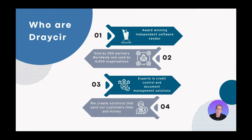So to start off with, Dracer. As an organization we're based in the UK but we sell our software throughout the world. We have about four and a half thousand organizations who use our products and we sell our products through our business partner network which consists of around 500 business partners. We're a leading ISV, so independent software vendor, and we create award-winning solutions that focus around real business challenges such as credit control, document management, payments, and the one we're going to look at today which is purchase invoice automation.